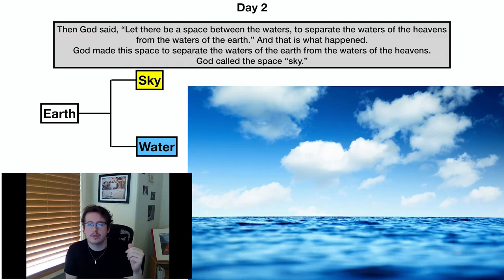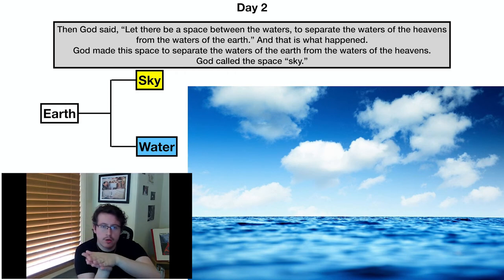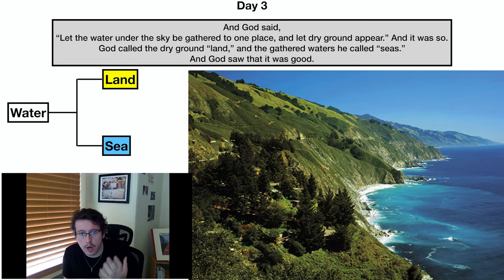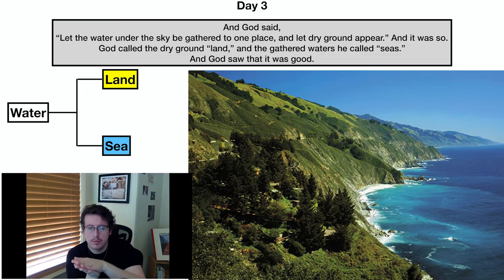On day two, God said, "Let there be a space between the waters to separate the waters of the heaven from the waters of the earth." God made this space and called it sky. So the earth below is split into sky above and water below — the above-and-below pattern again. On day three, God said, "Let the water under the sky be gathered to one place and let the dry ground appear." God called the dry ground land and the gathered waters seas, and he saw that it was good. So the water below was split into land above and sea below. Notably, from day one to day three, it gets more and more specific; going backwards, more and more abstract. Day one was light and dark, day two was sky and water, and day three is more specific with land and sea — a zooming-in idea.